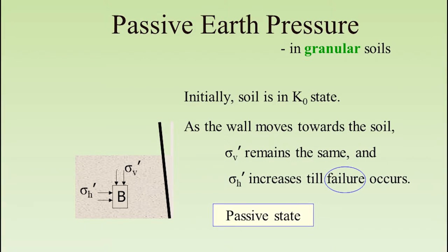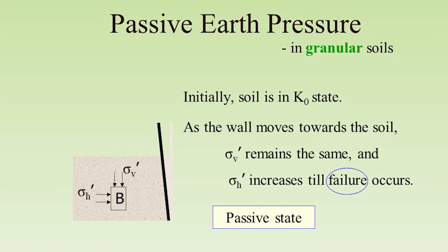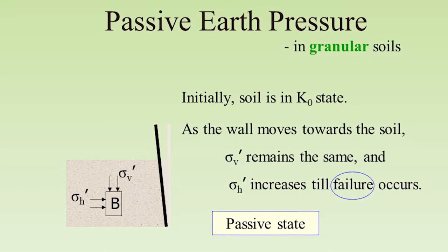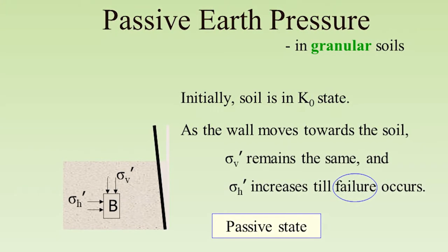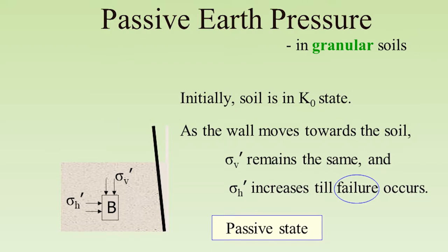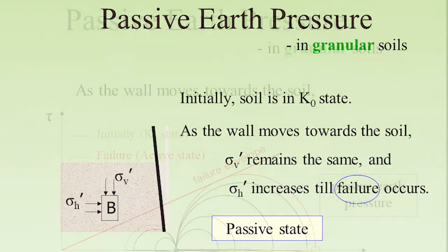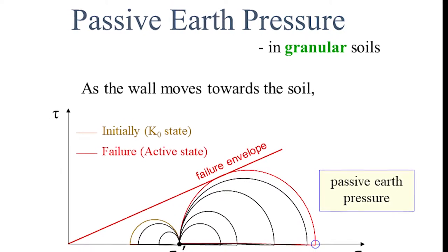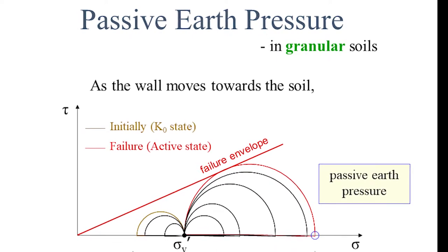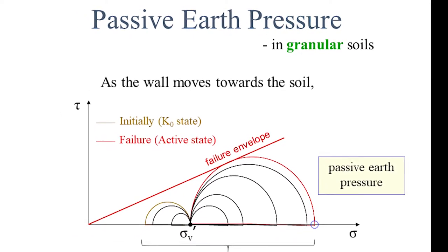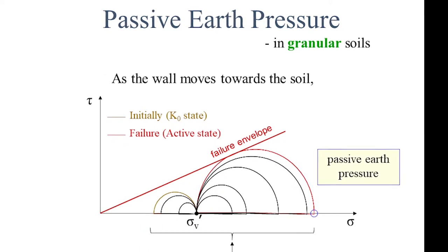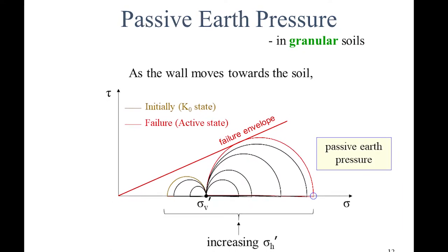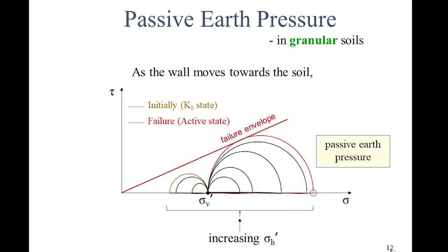For passive earth pressure in granular soils, initially the soil is in the K0 state. As the wall moves towards the soil, sigma V dash remains the same and sigma H increases until failure occurs. The Mohr circle stress increases and then touches the failure envelope. This state is known as the Kp — the passive earth pressure state.